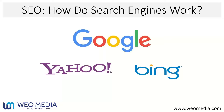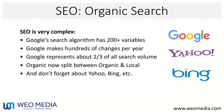Each time a search engine indexes, it compares what it saw 30 days prior to what it sees today: have there been improvements, new content, improved code, blog posts, new pages, or videos? You've got to feed the beast a little bit. Because search engines evaluate you every 30 days, SEO has to be an ongoing effort — you're being judged on an ongoing basis. Some things like optimizing your code are done once, but many things must be done on an ongoing monthly basis.